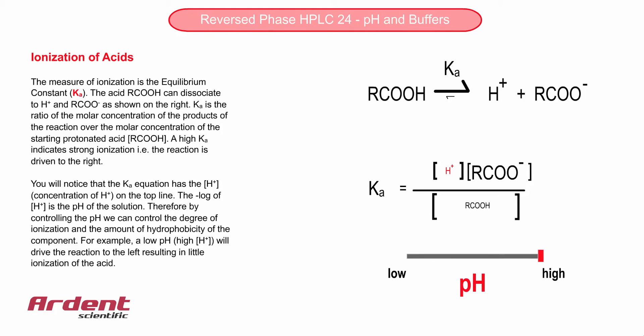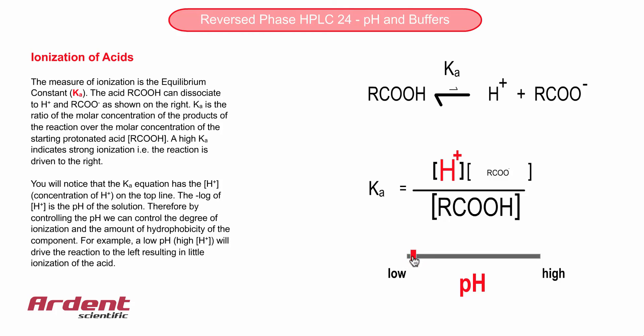When the slider bar is moved to the left, the pH decreases — or to put that another way, the concentration of hydrogen ions increases — resulting in these ions reacting with the carboxylate ions to produce more of the neutral acid. In other words, the reaction is driven to the left, which is more favorable in reversed-phase HPLC, because the component is now in a non-ionic or hydrophobic form.